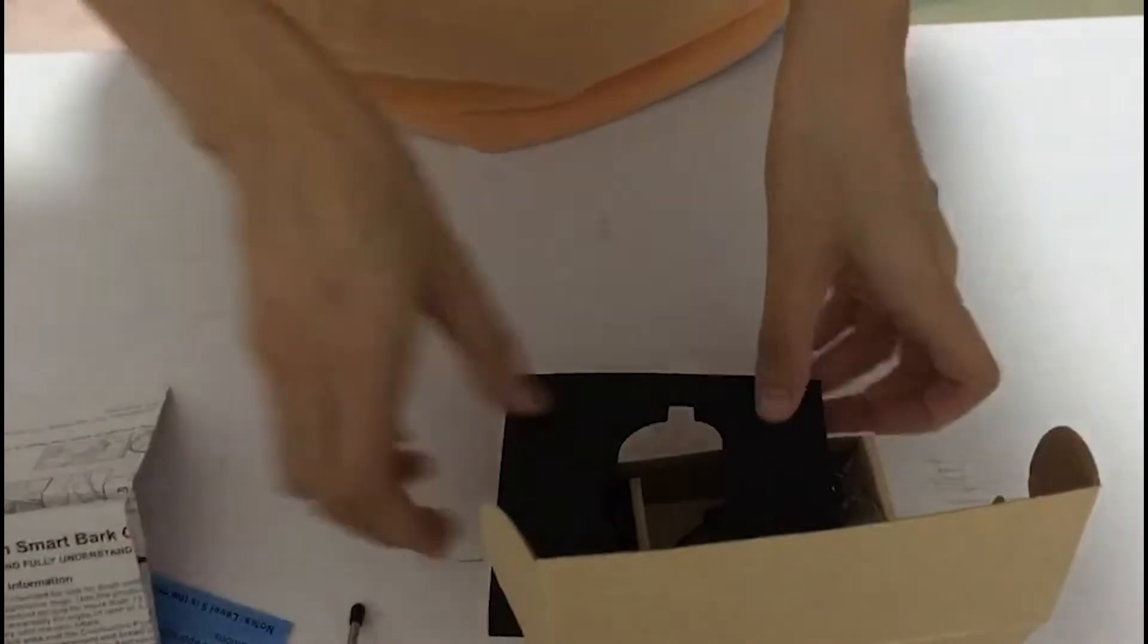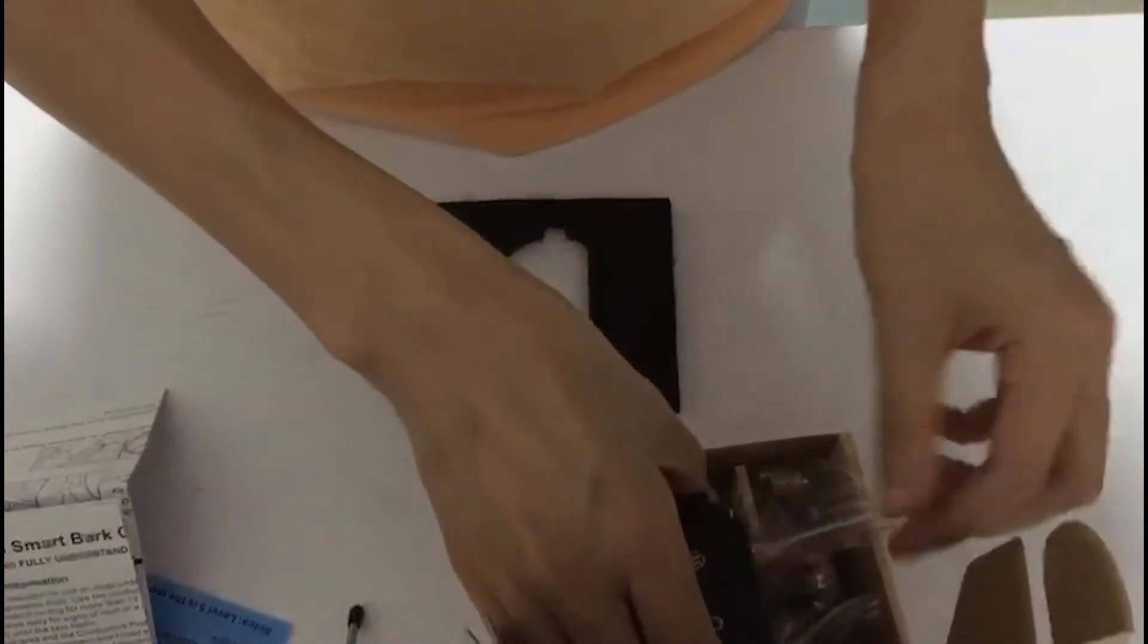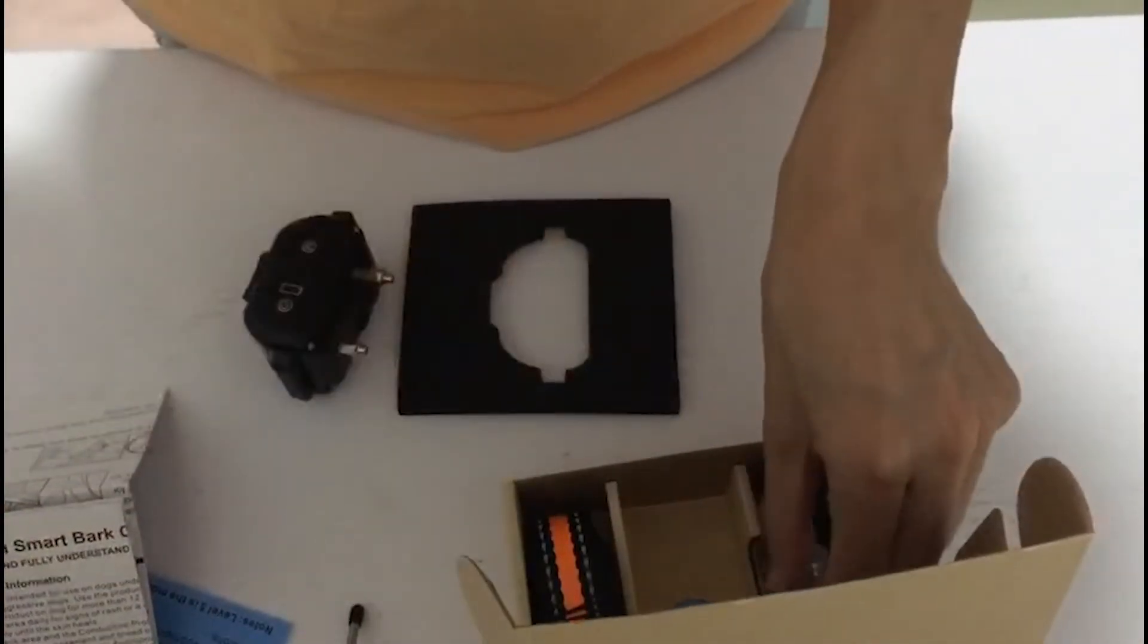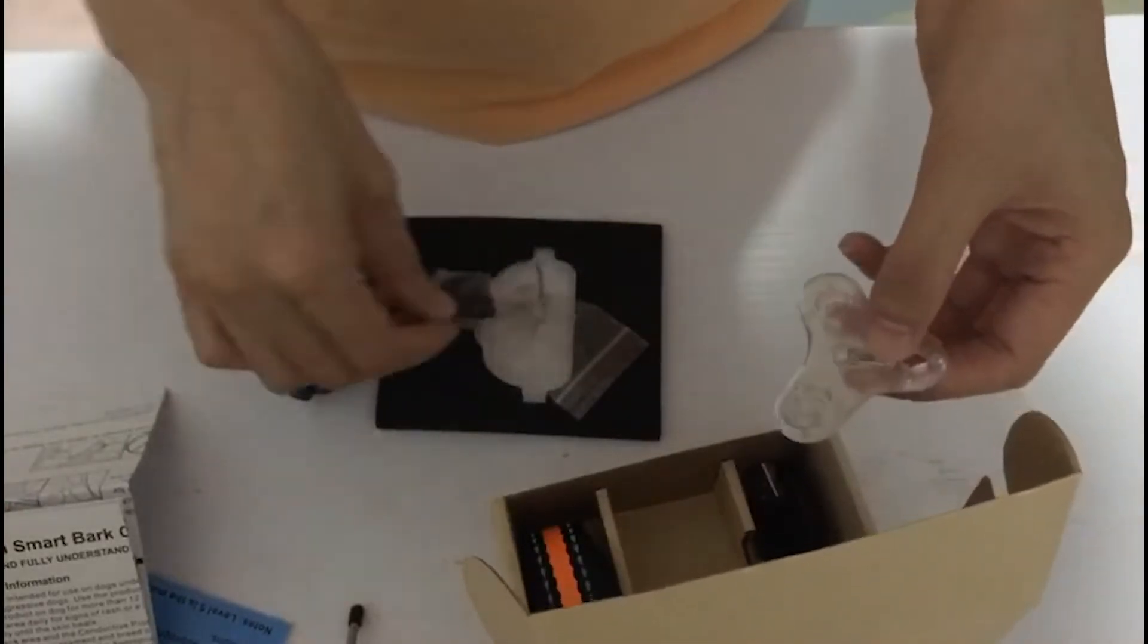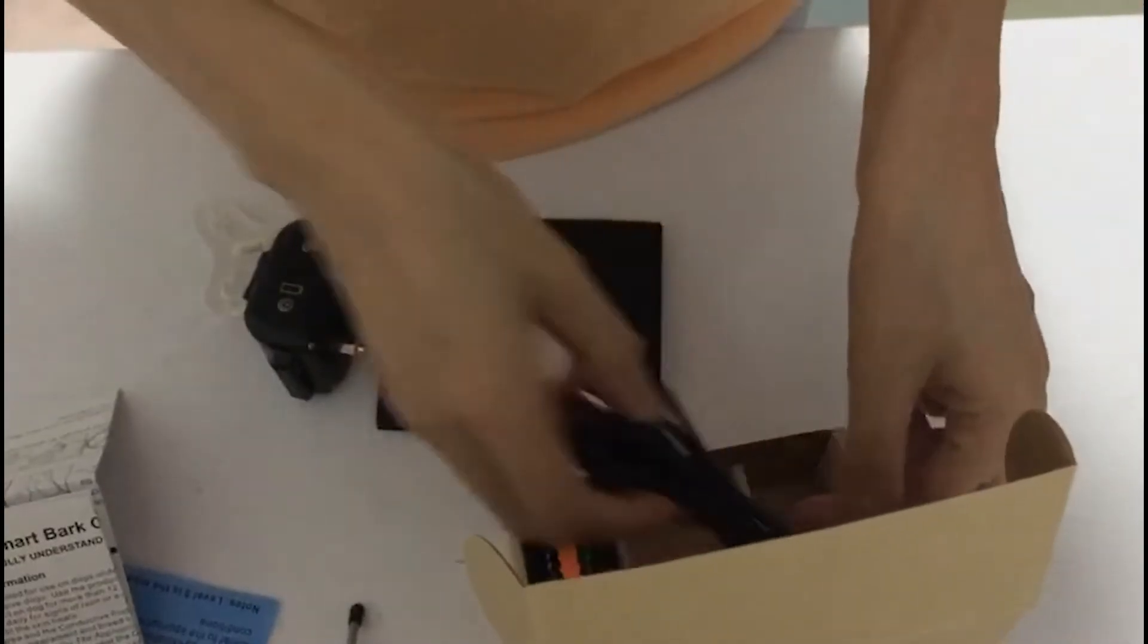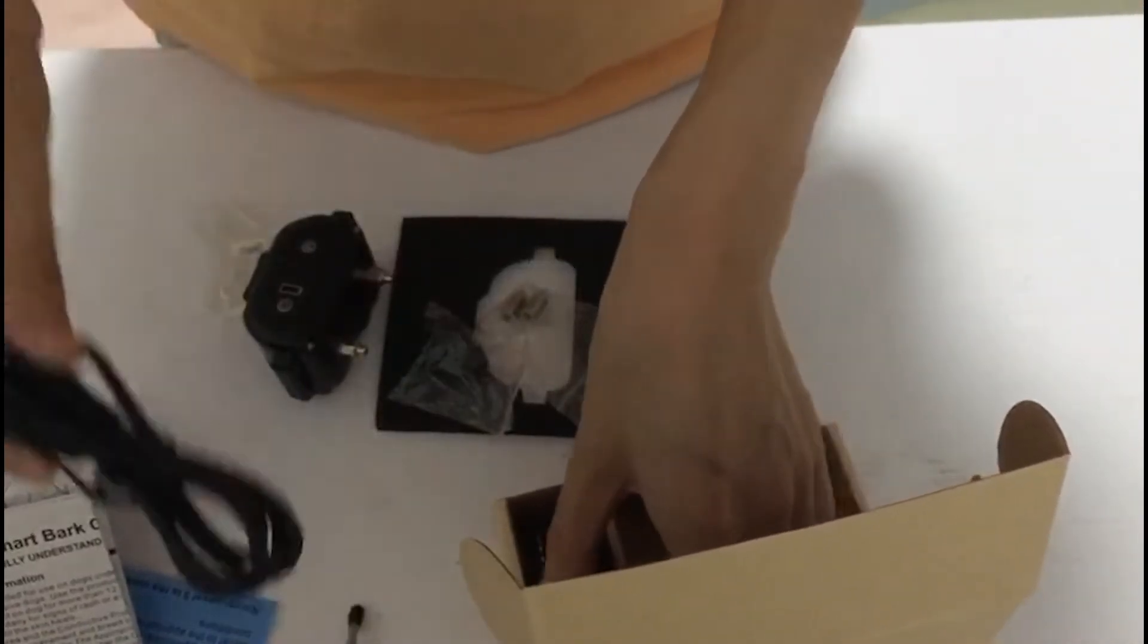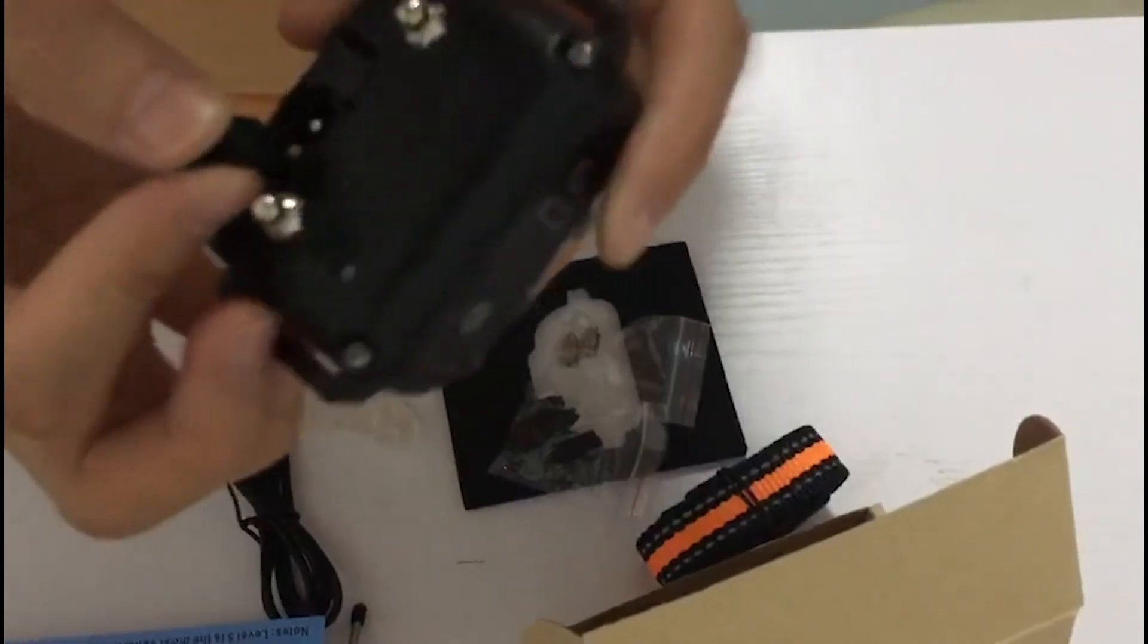This is the manual, the warning for the charge. This is the remote, this is the bark collar probe and the conductive probe cover. This is the test adapter, USB cable, and it's a nylon collar. You can see it's rechargeable with the power bank.